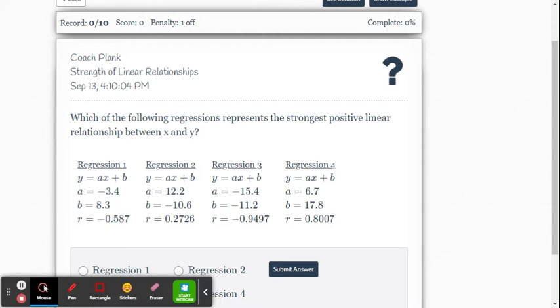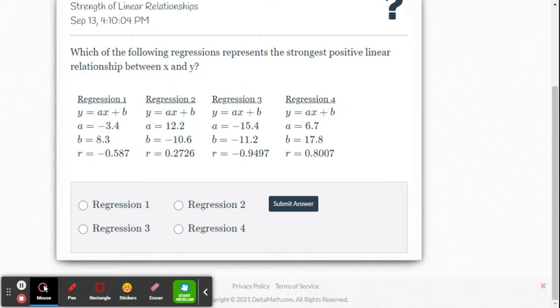In this video, we're going to look at a couple of examples for strength of linear relationships problems within the Delta Math Online System. In here it gives us four regressions, and it says which of the following regressions represents the strongest positive linear relationship between x and y?